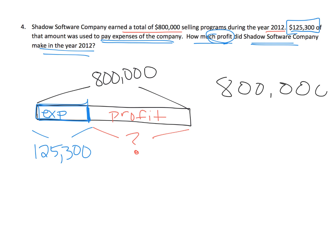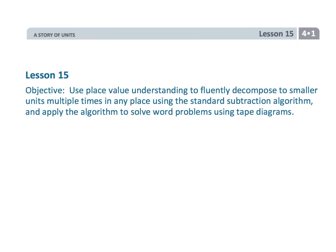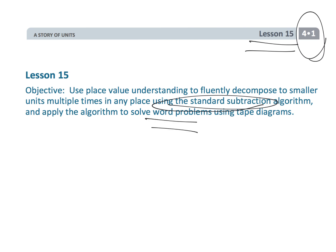So of this tape, some of it — I'll just arbitrarily say this much right here — was $125,300, that's the expenses. And then the rest over here must be profit, and that's what we're asked to find. This ends up being a beautiful tape diagram that looks like a part-part-whole, which means we're going to subtract $800,000 minus $125,300 — there's going to be lots of regrouping. And that wraps up fourth grade, module one, lesson 15, continuing to use the standard algorithm, in this case mostly with word problems.